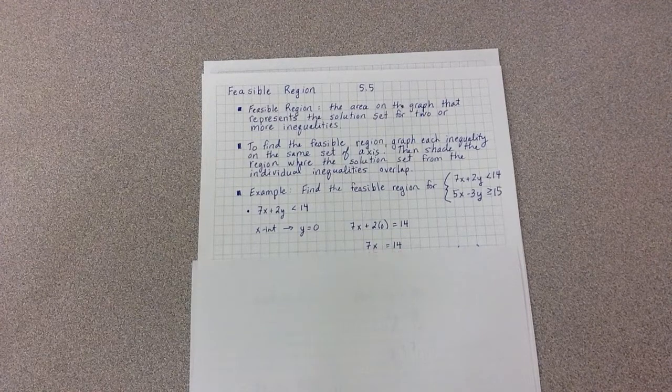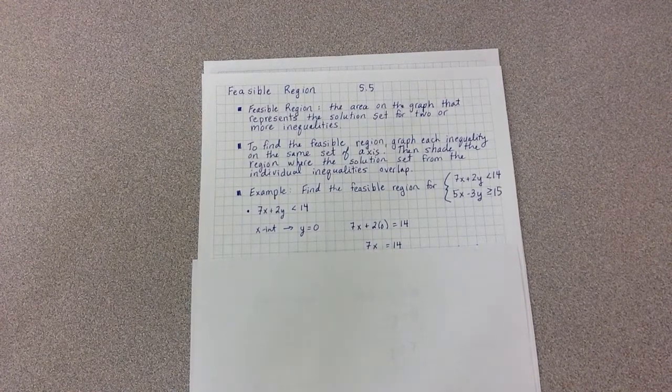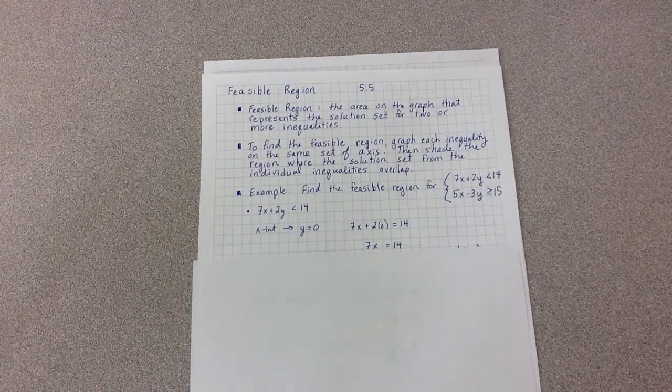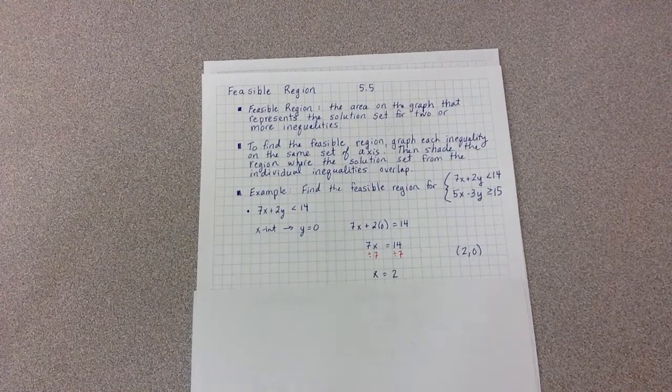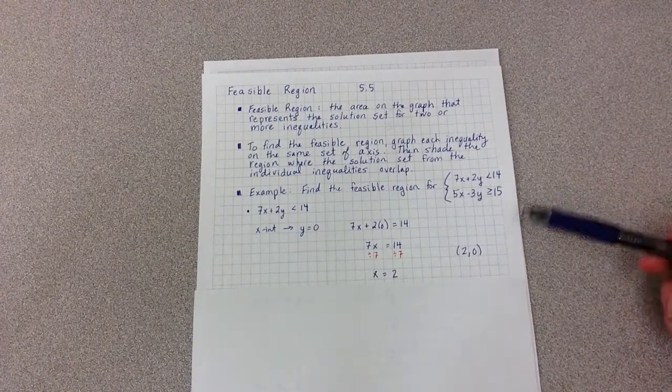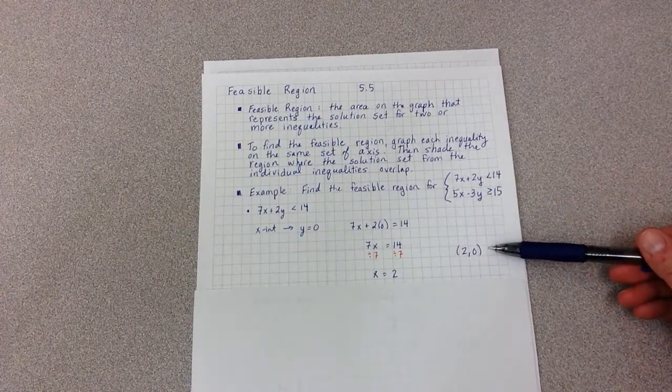So I simplify. I get 7x equals 14. I divide both sides by 7. I get x equals 2. And then I write my final answer as a point, 2, 0.